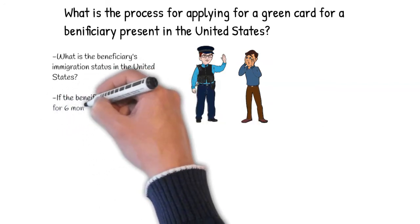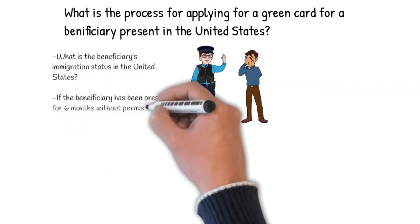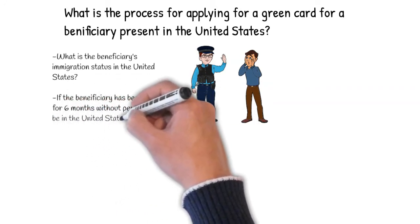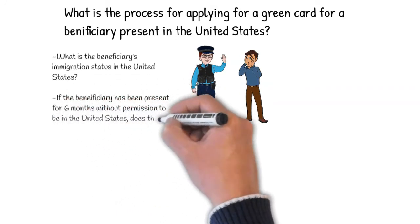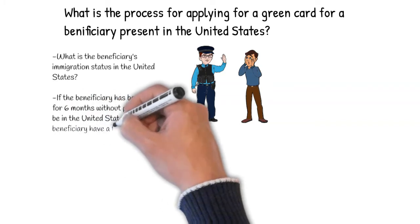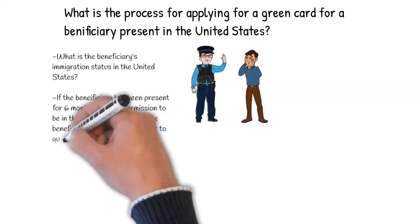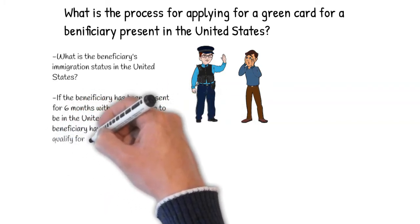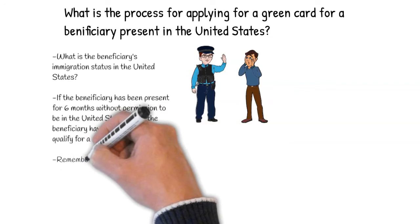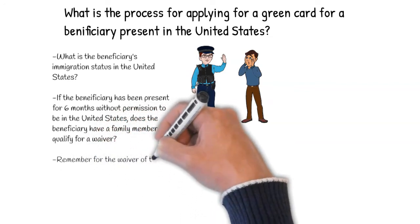If the beneficiary is without legal status, then the time present without status must be determined. If the beneficiary has been out of status for six months or more but less than one year, the beneficiary will be exposed to a bar preventing them from obtaining an immigration benefit for three years. If time out of status was for a year or more, then the bar is ten years.